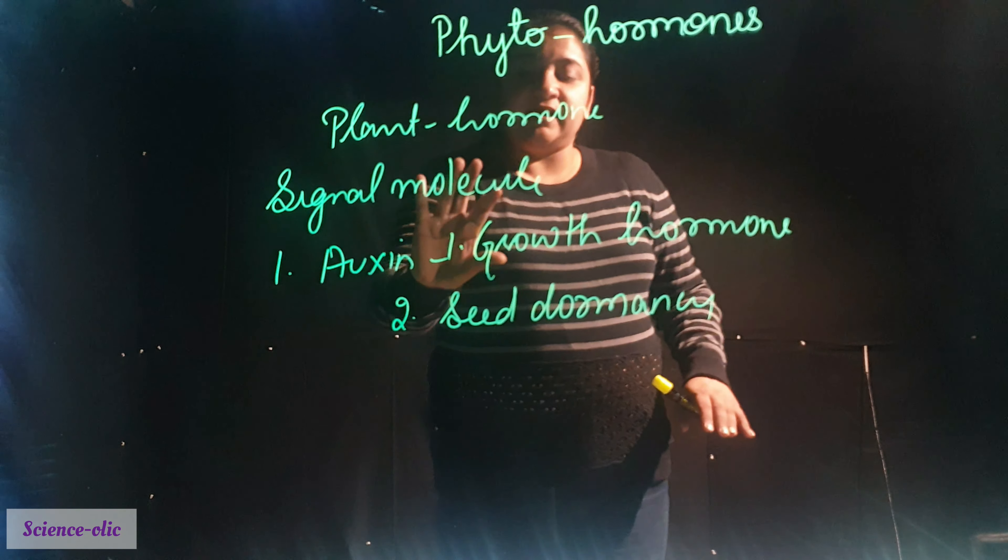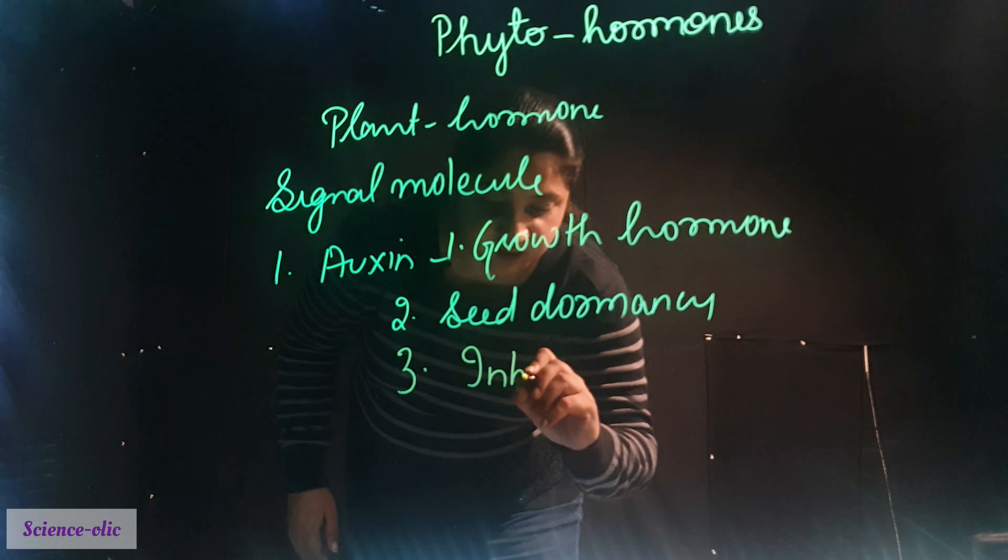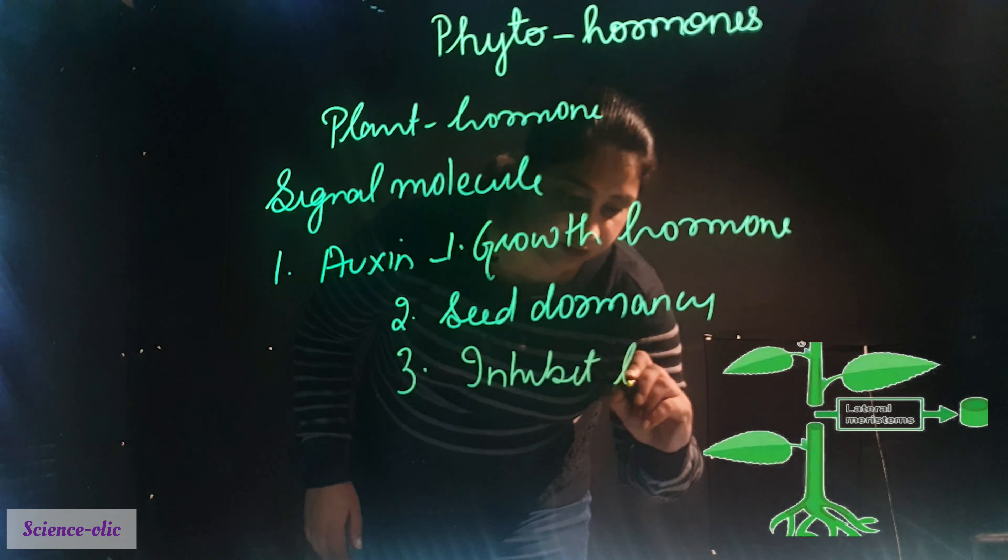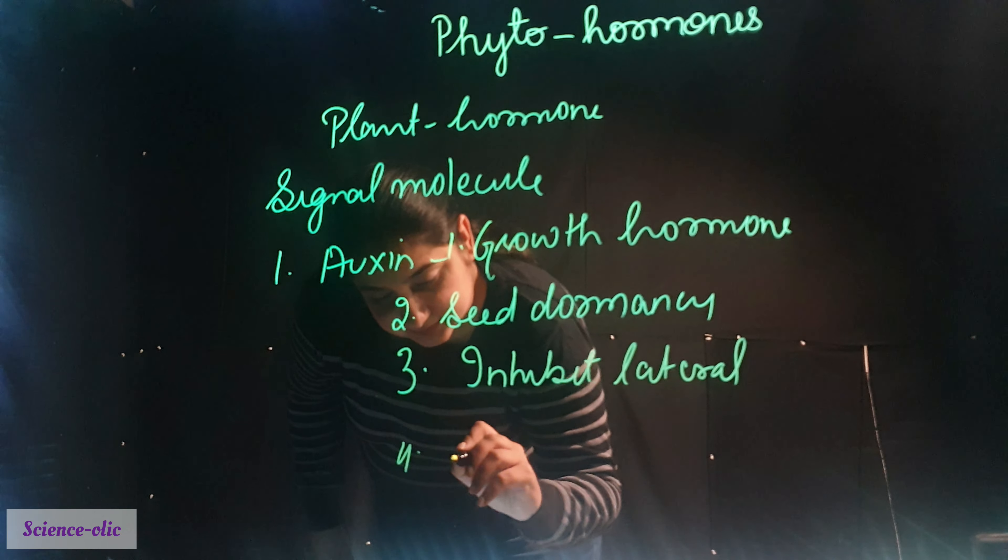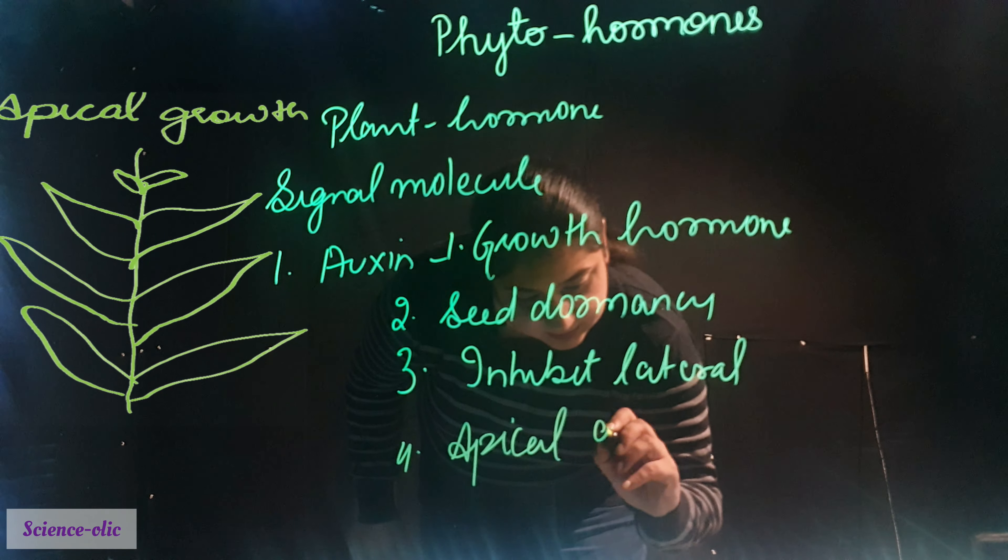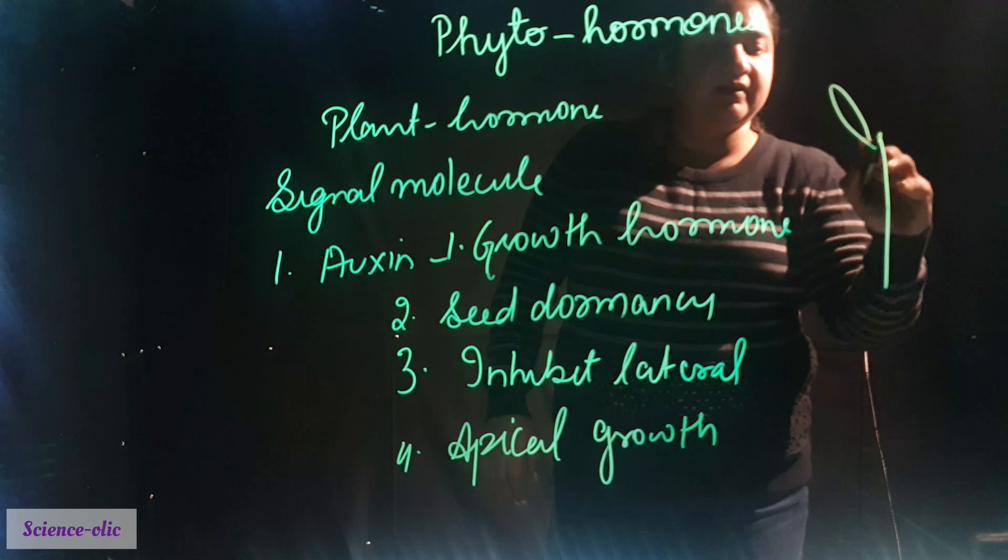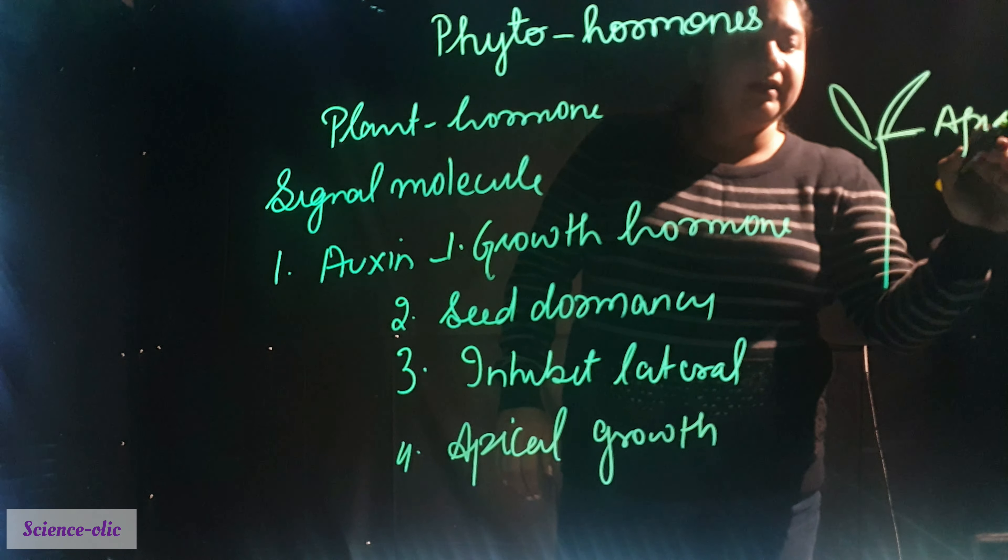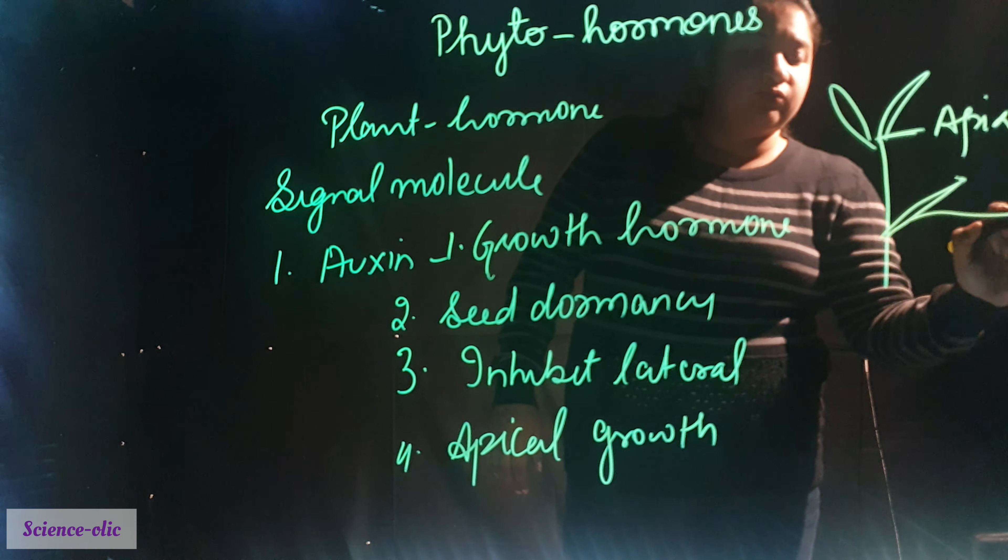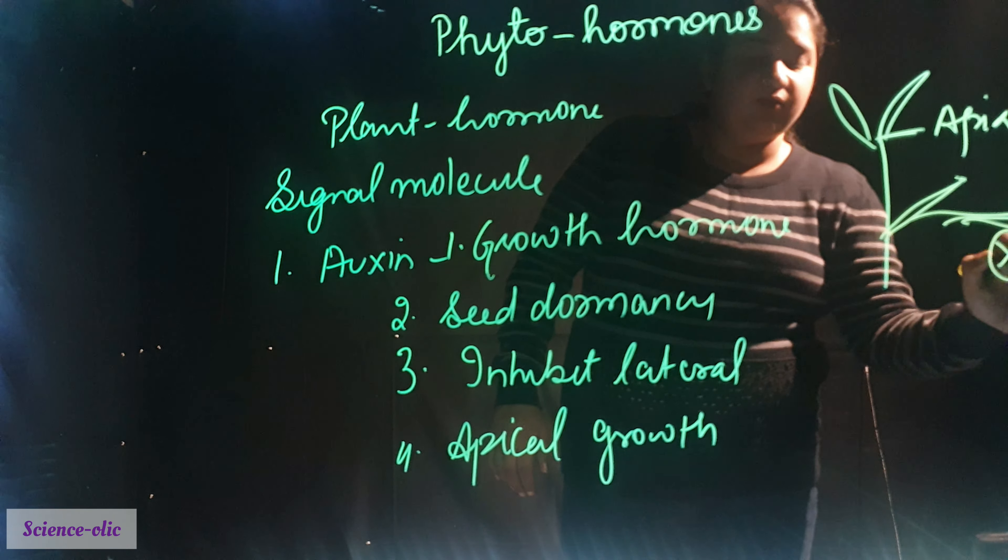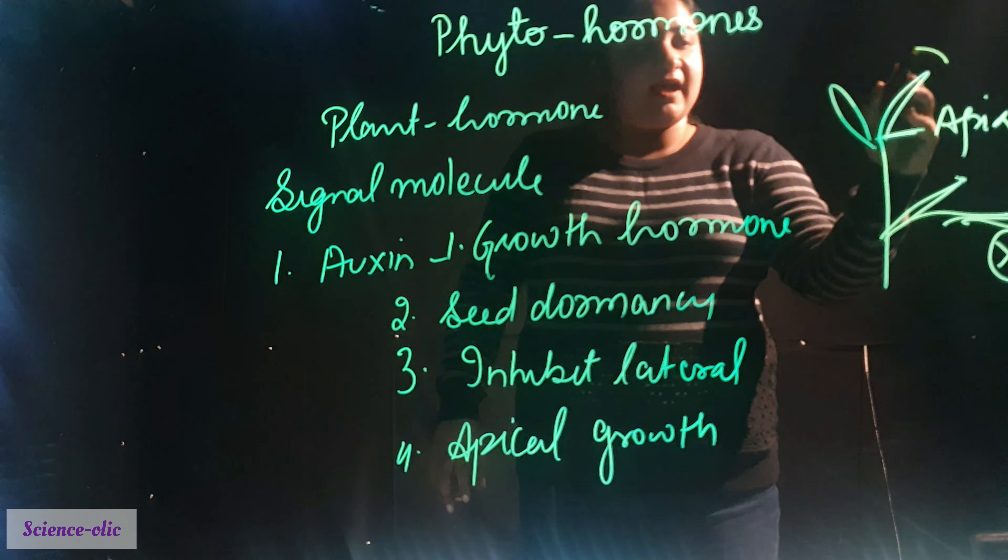Auxin helps in growth and seed dormancy. It also inhibits the lateral growth of the plant. It helps in apical growth. This is the plant. This is its apex. It helps to promote apical growth, but it inhibits or stops lateral growth. This is not allowed. Auxin does not help in lateral growth, it helps in apical growth.